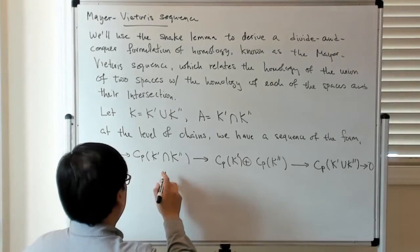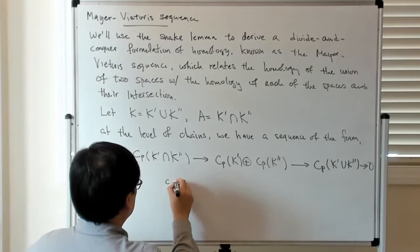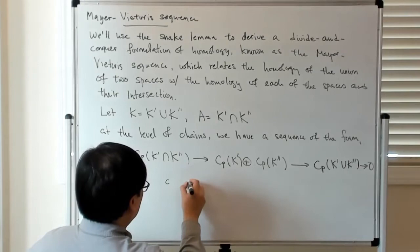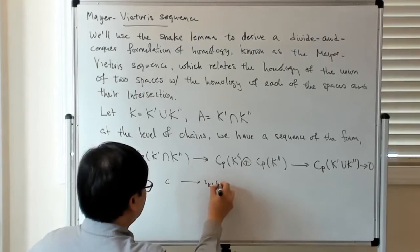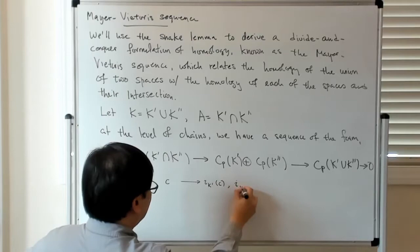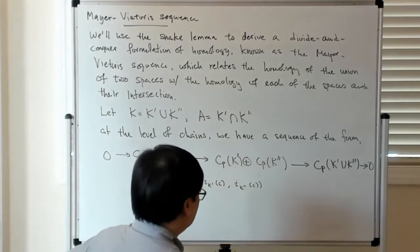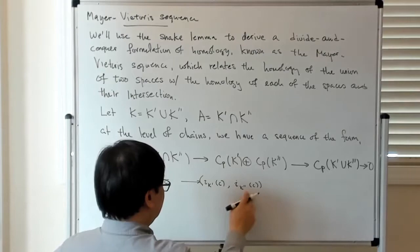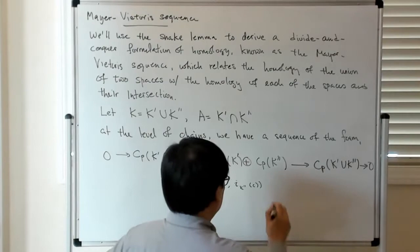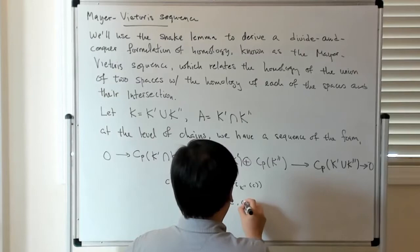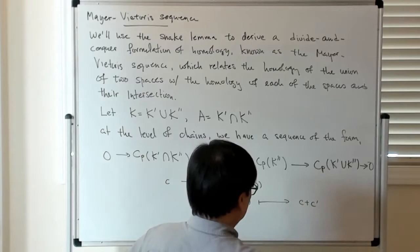And essentially what happens is that you take C, a chain which is supported on the intersection of the two spaces, and you map this to the inclusion into K prime of C and the inclusion into K double prime of C. So this is an element in the direct sum of the chain group on K prime and the chain group on K double prime. And you can do this because C is supported on the intersection, so there's an inclusion into K prime as well as to K double prime.